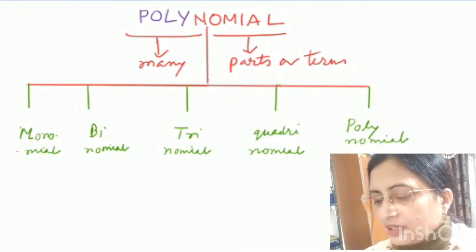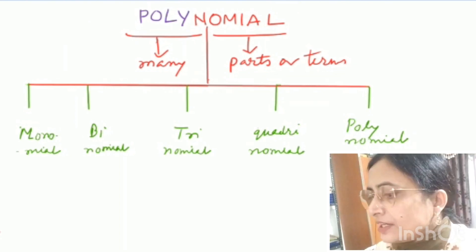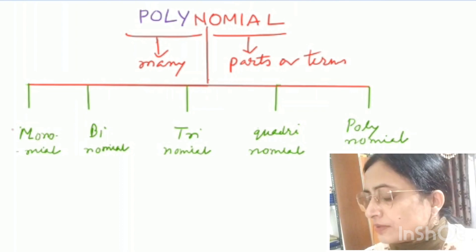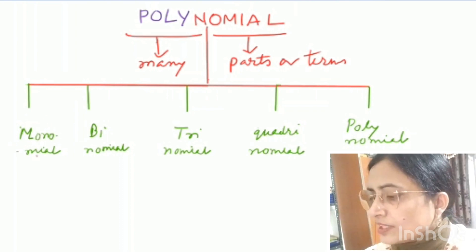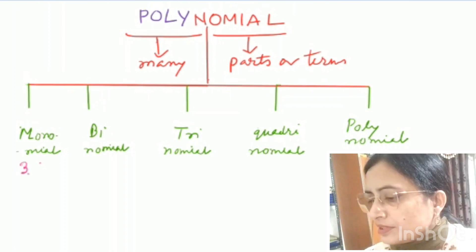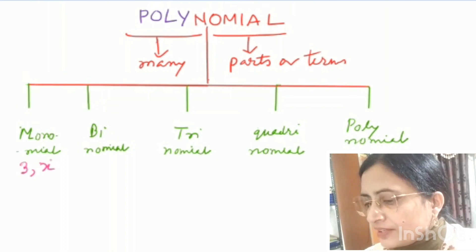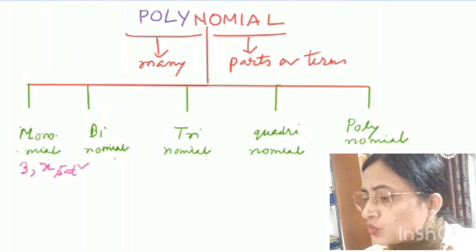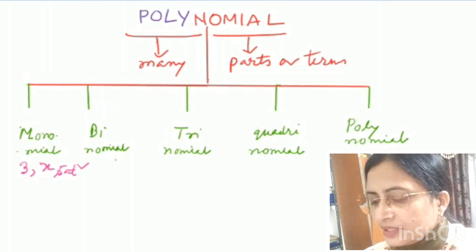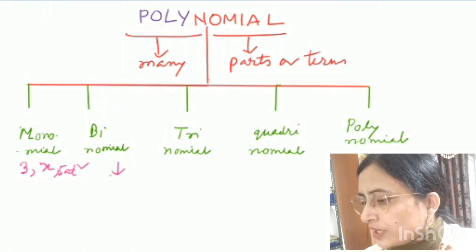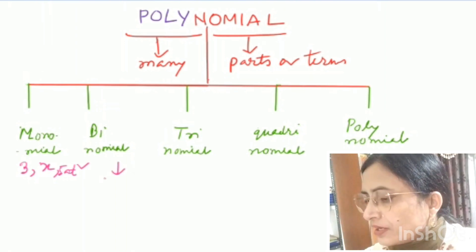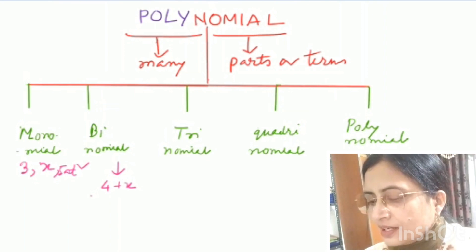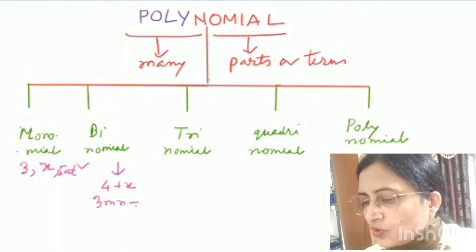An expression with one term is called a monomial — for example, 3x, 5, 8t², etc. An expression with two terms is called a binomial — for example, 4 + x, 3mn − 2, and m²n² + 5 are all binomials because they each contain exactly two terms.